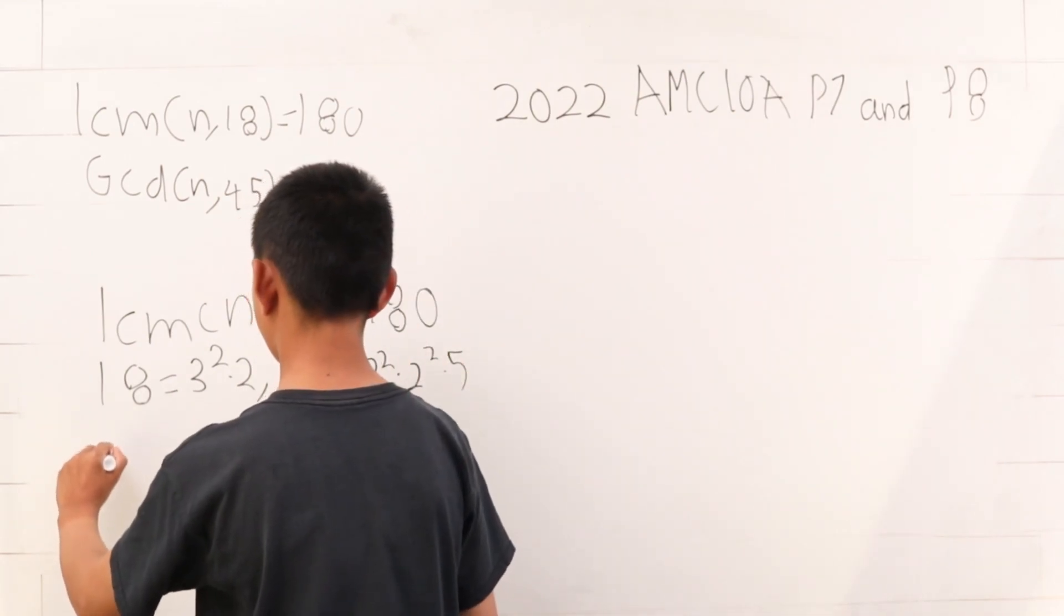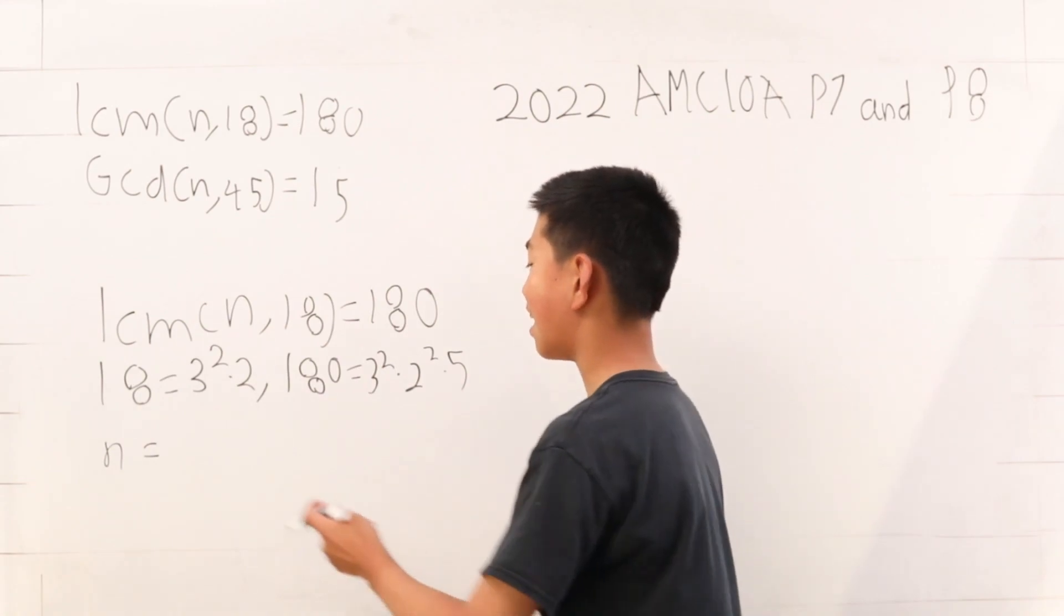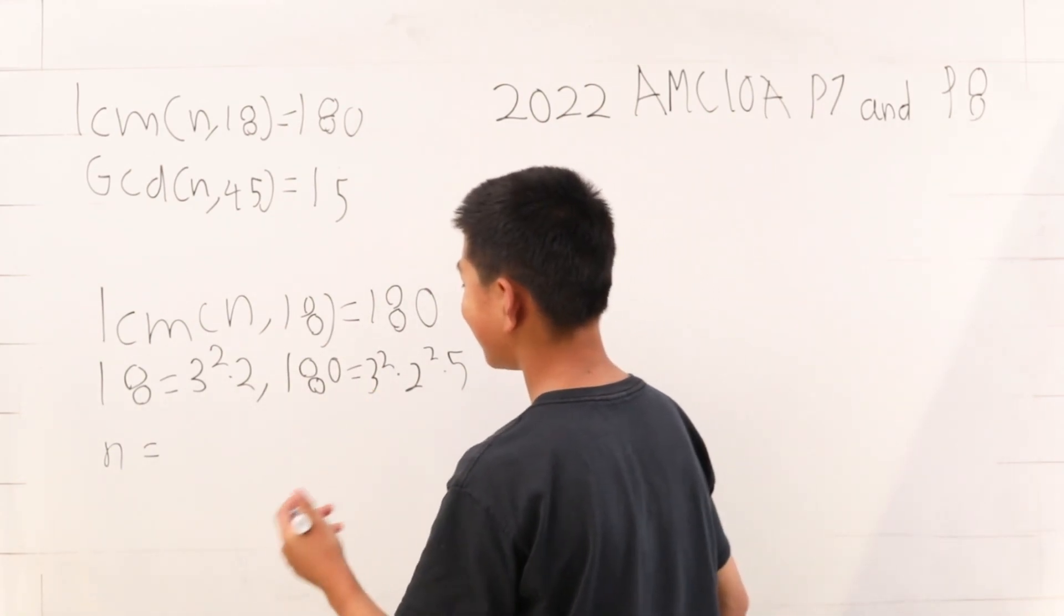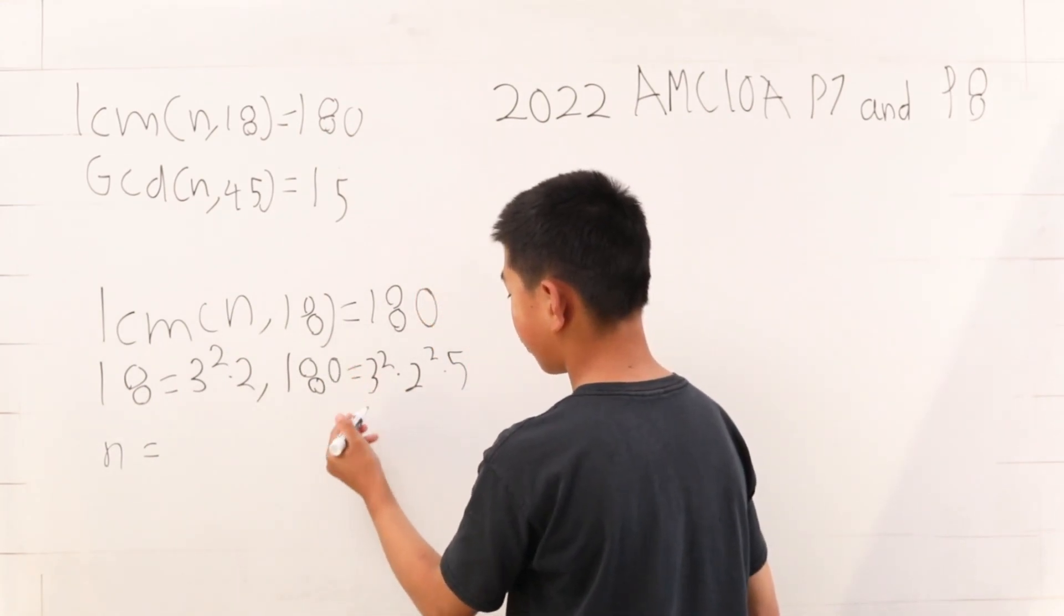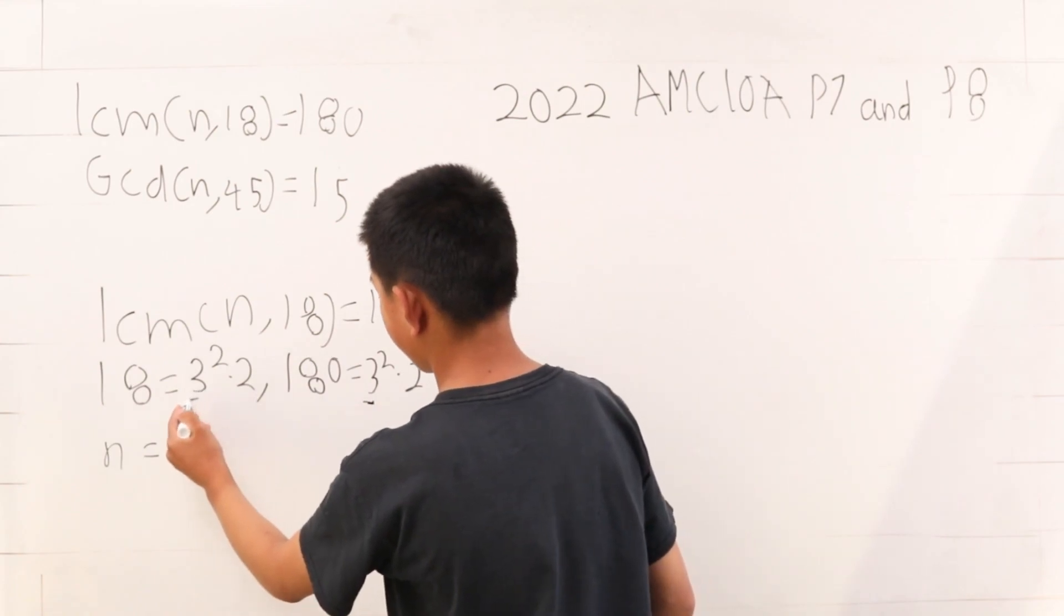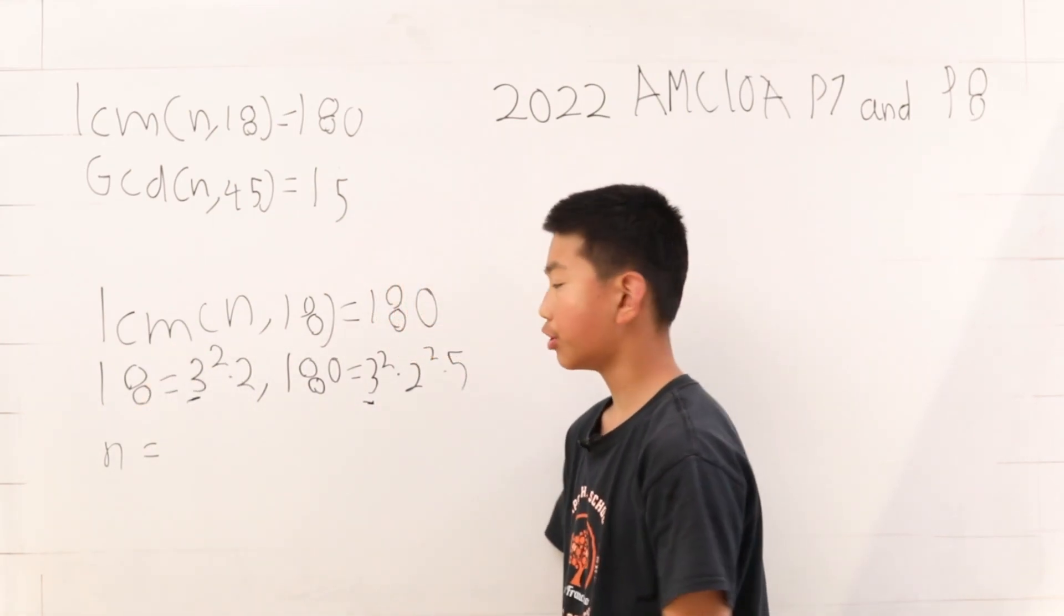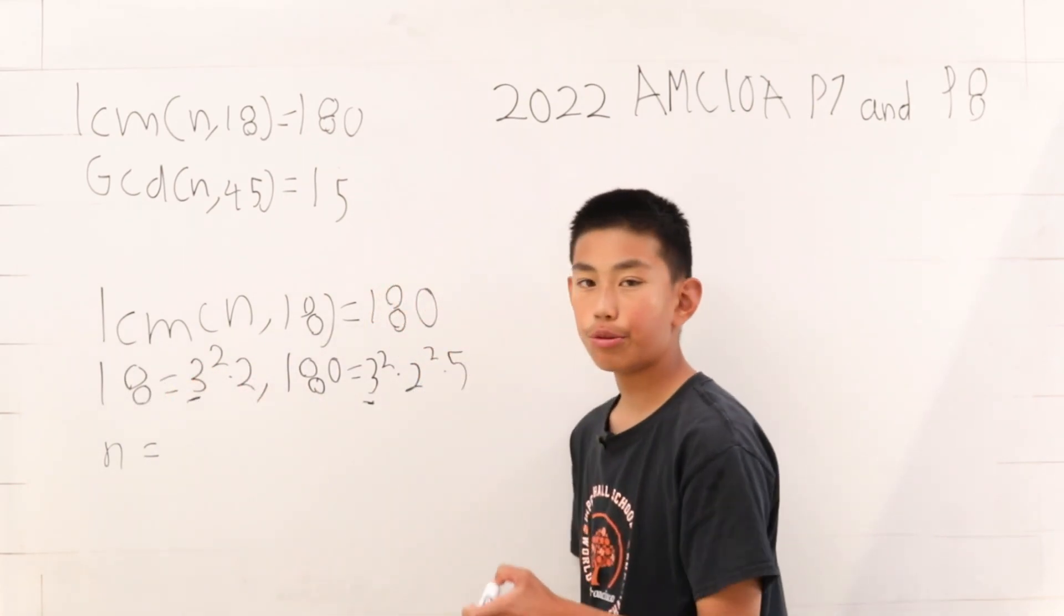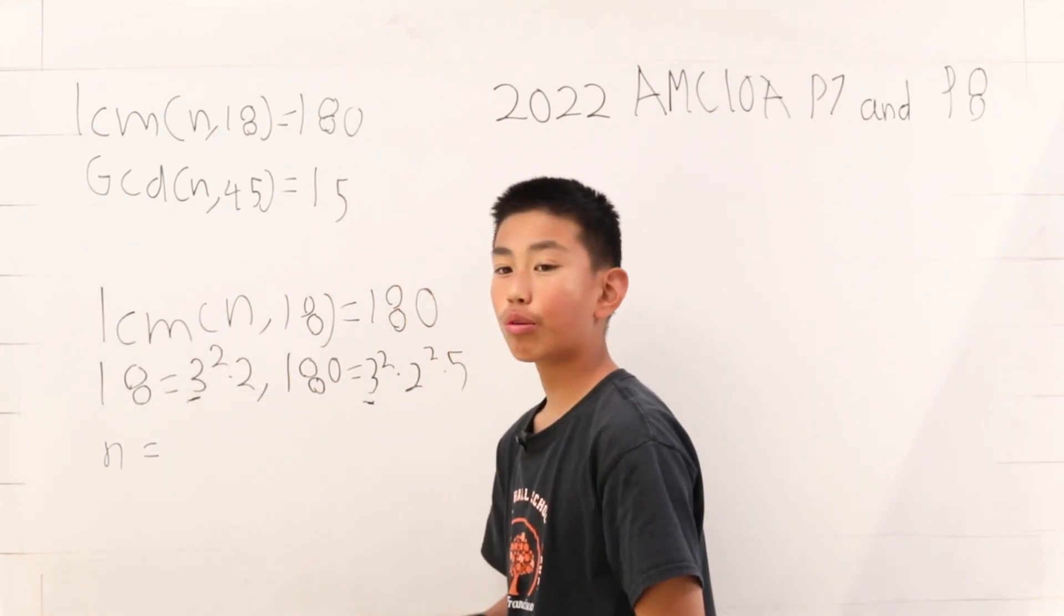Given this, we can already find out a few things that multiply to n. We see here a pattern. There's a 3 squared from the 180 and a 3 squared from the 18. So obviously, the 3 squared was taken from the 18. Basically, for least common multiple, you want to have the greatest numbers.